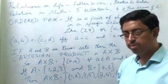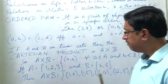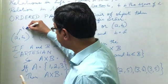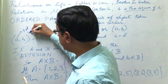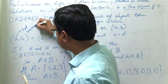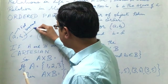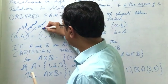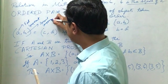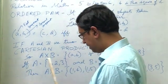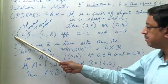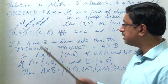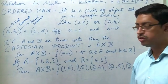Now you must remember one thing. The first element is called the first component and the second element is called the second component. So in an ordered pair, the first element is called the first component and the second element is called the second component.